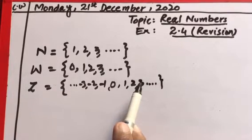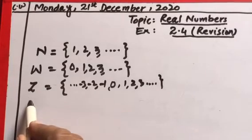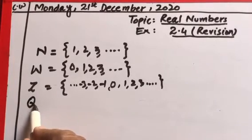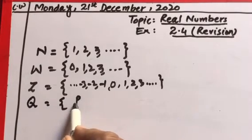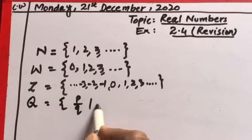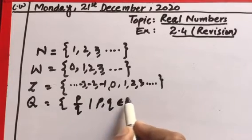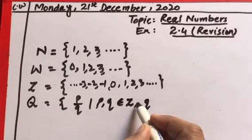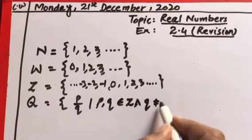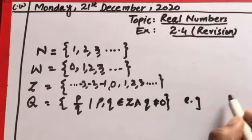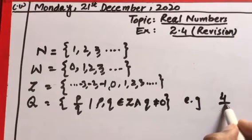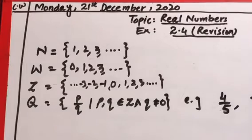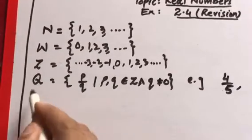After that we revised the rational numbers, which are represented by Q. All numbers which can be written in the form p/q, where p and q belong to integers and q is not equal to 0, are rational numbers. For example: 4/5, −3/7, etc.